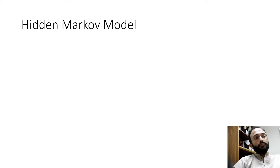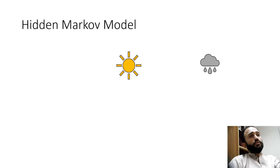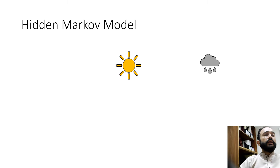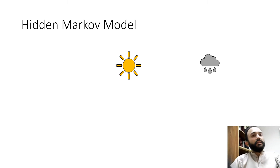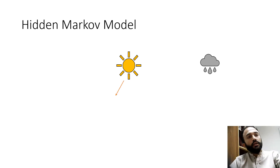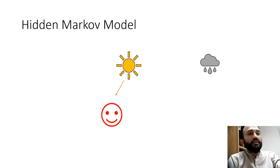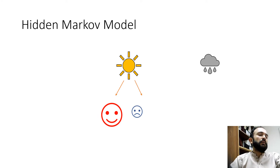Let's take an example. There are two types of states: one is sunny weather and one is rainy weather. There is a person named Bob. Bob is mostly happy on a sunny day, and sometimes sad on a sunny day. So there are two observations against a sunny day.